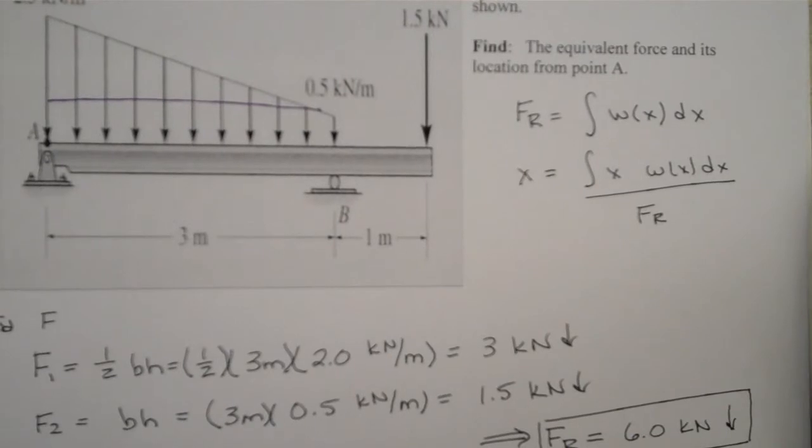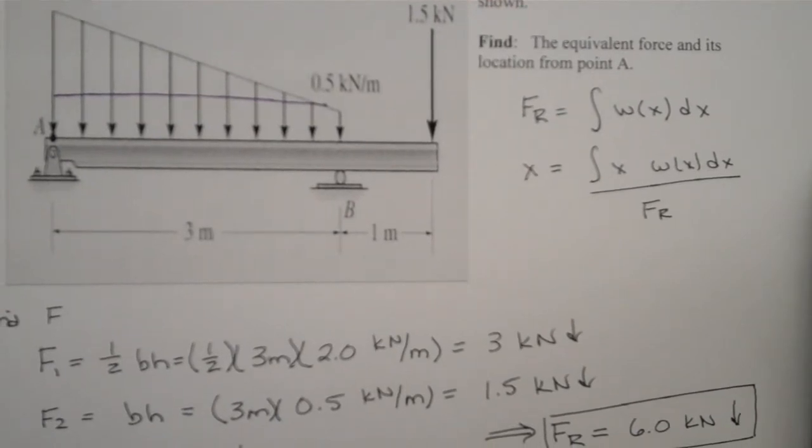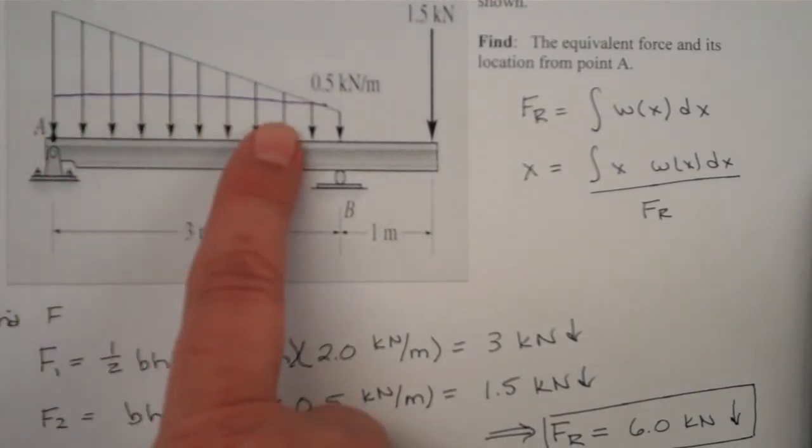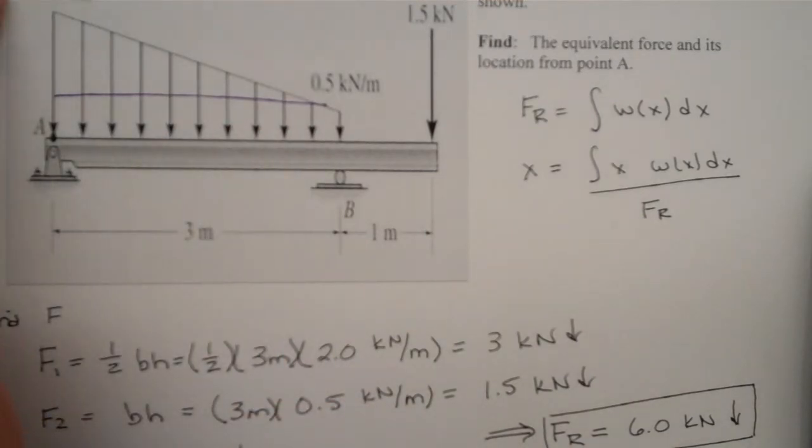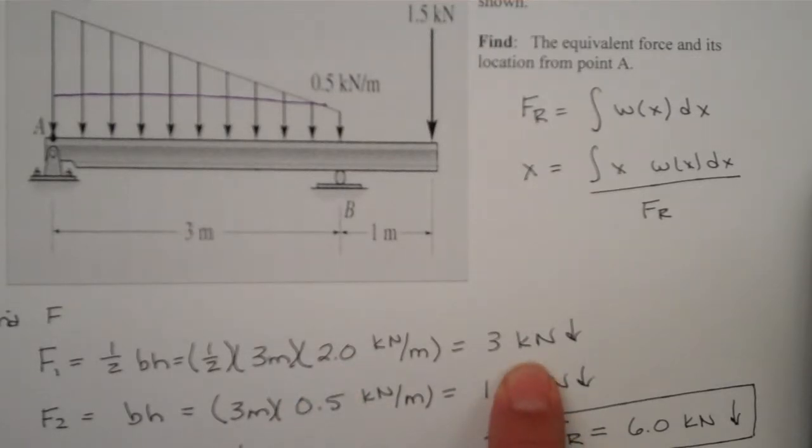So, let's do force one, which is the triangle there, one half base times height, one half base of three, and height would be 2.5 to 0.5, or two kilonewtons per meter. We multiply that out, and we see that the net force for that triangle is three kilonewtons.